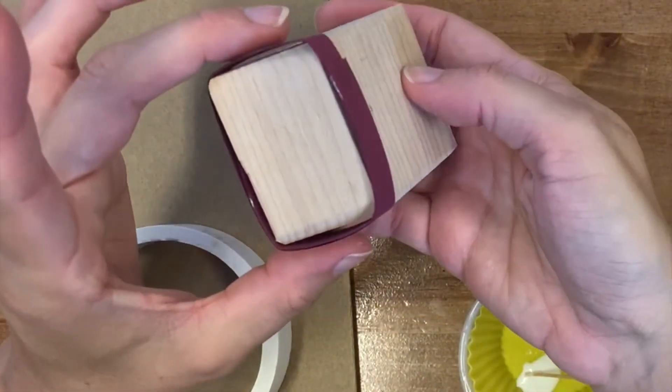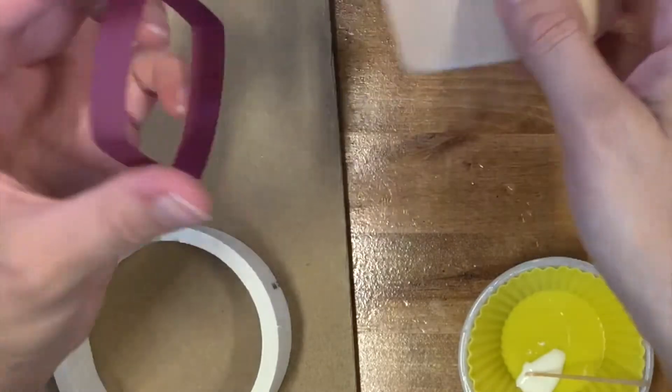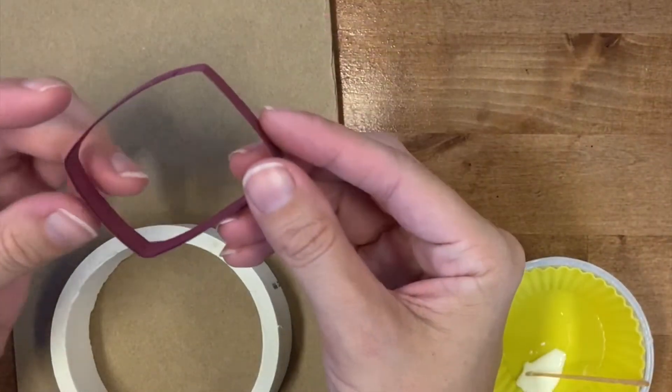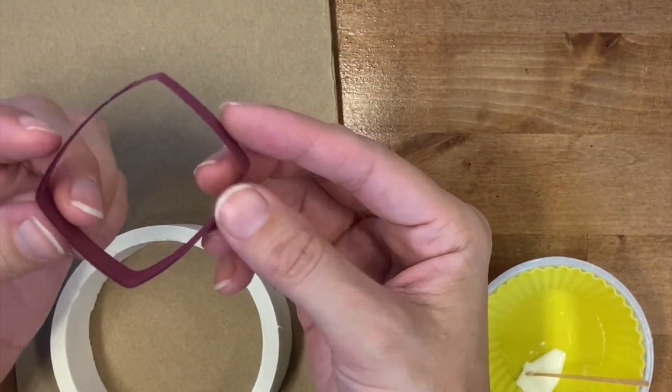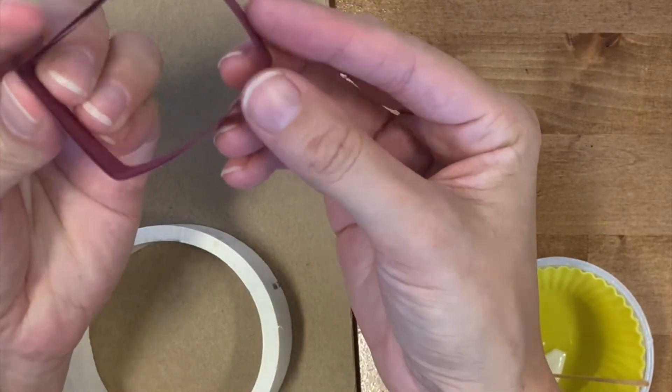Now I can gently pull my piece off the template. If I want my corners to be sharper, more pointed and less rounded, all I have to do is squeeze them a little bit.